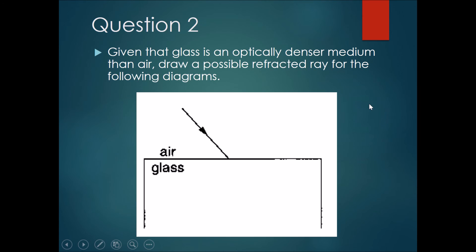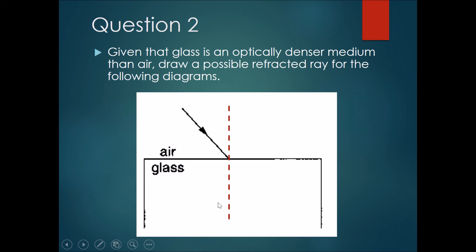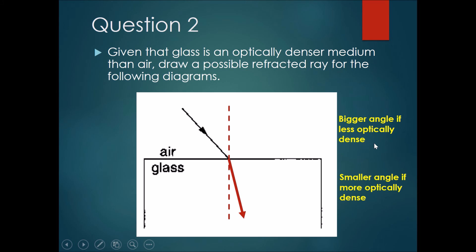Next question: given that glass is an optically denser medium than air, draw a possible refracted ray. When air is coming into glass, draw the normal line first, then sketch a line closer to the normal — making the angle in glass smaller and the angle in air bigger. You should have a bigger angle in the less optically dense medium and a smaller angle in the more optically dense medium.